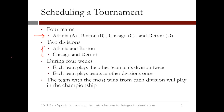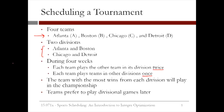Each team plays one game a week for a total of four weeks. During the four weeks, each team plays the other team in the same division twice, and each team plays the teams in the other divisions once. The team with the most wins from each division will play in the championship game. For this reason, teams prefer to play divisional games later.